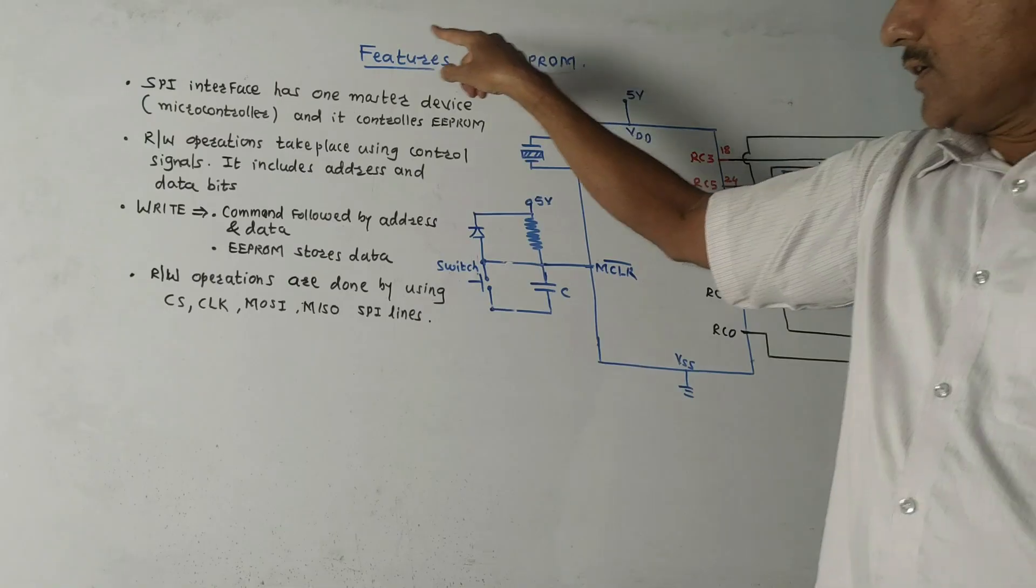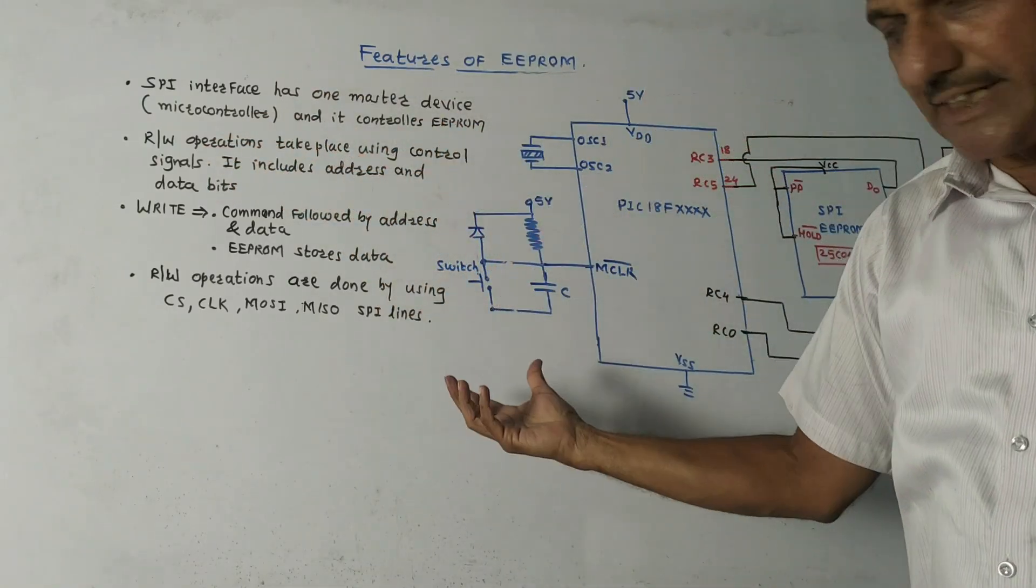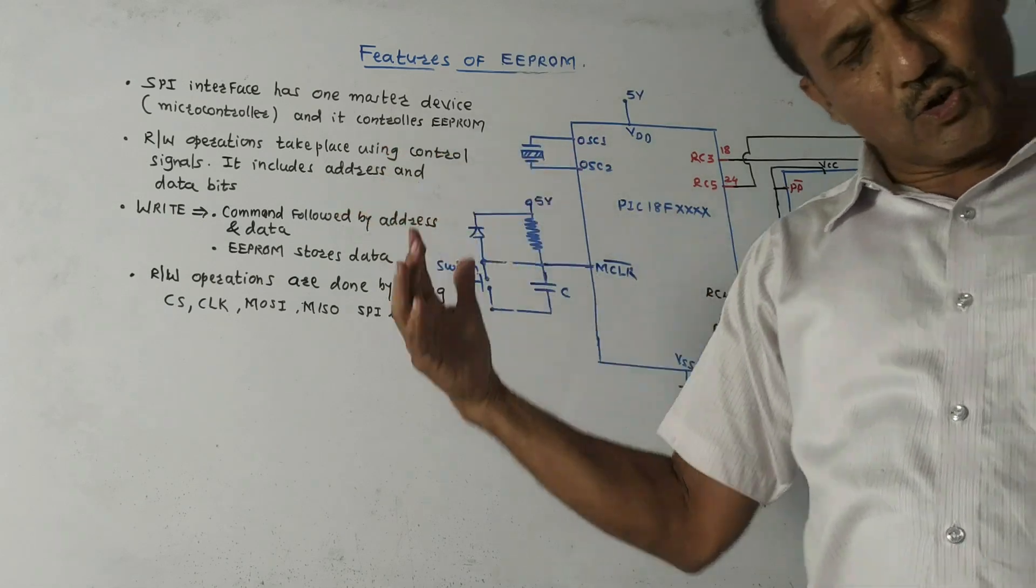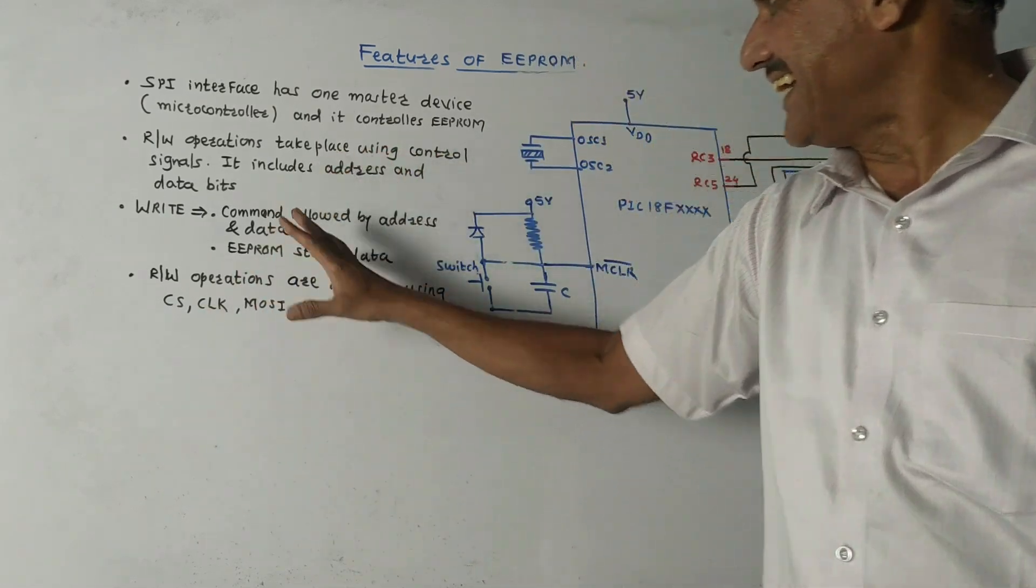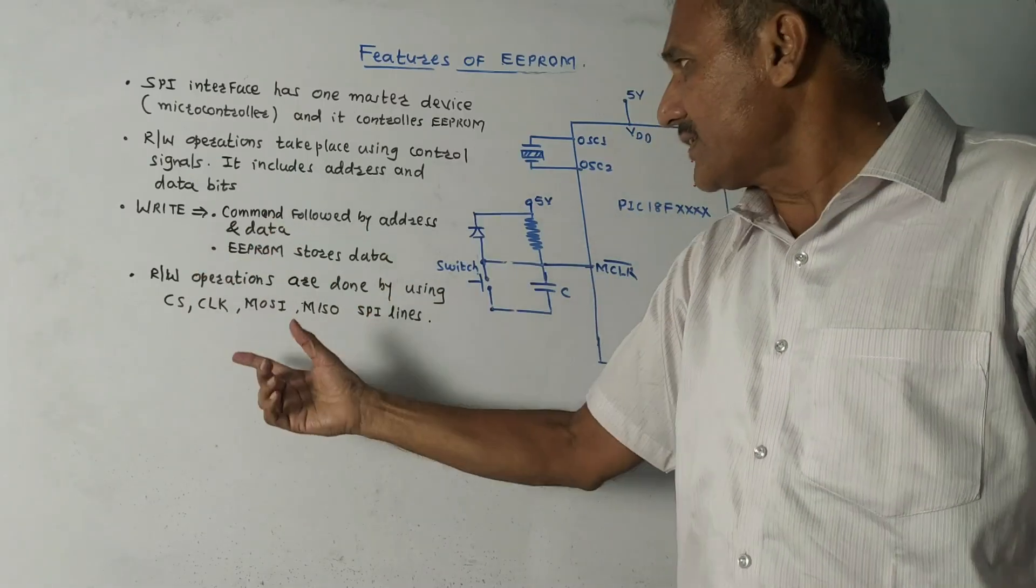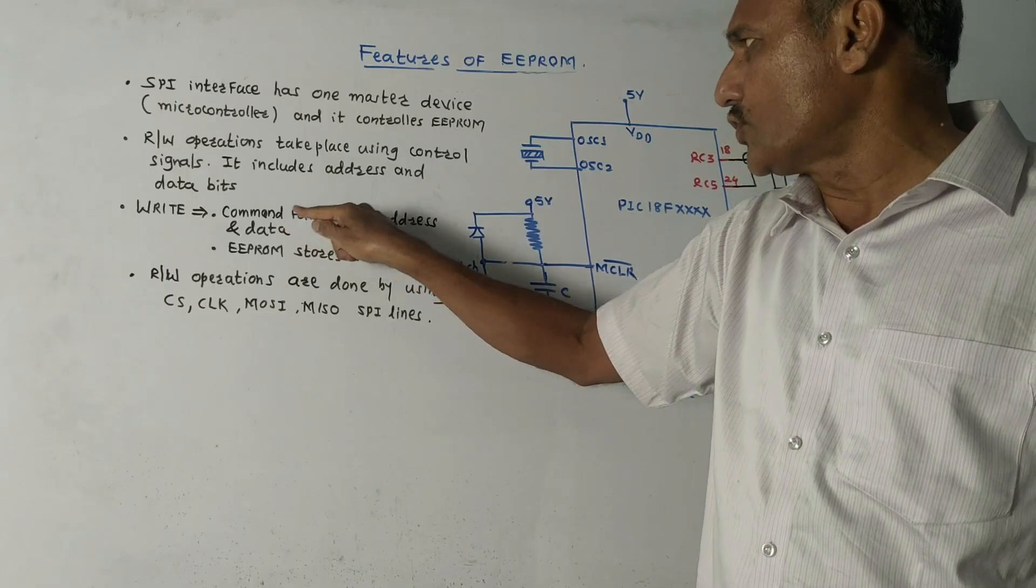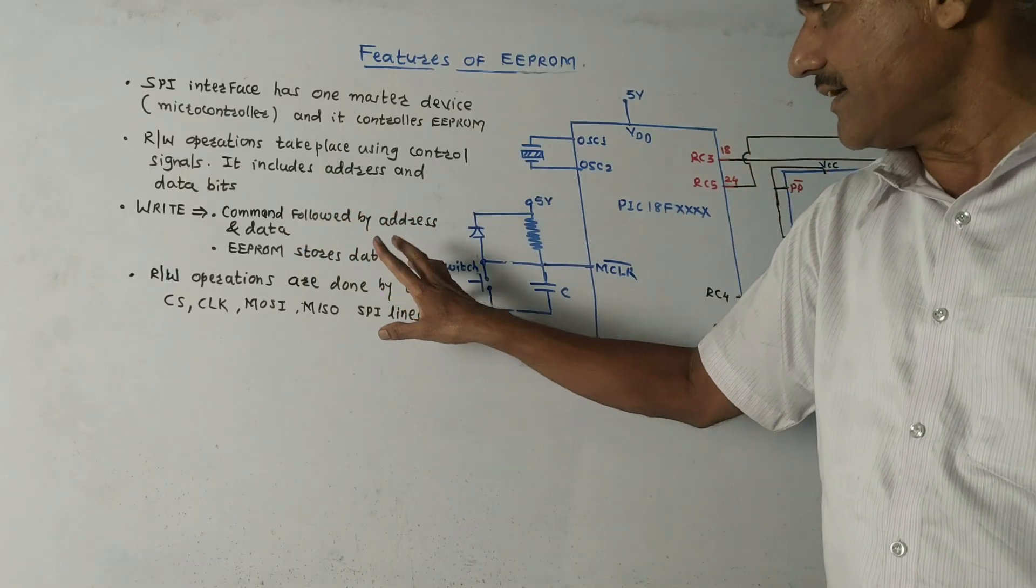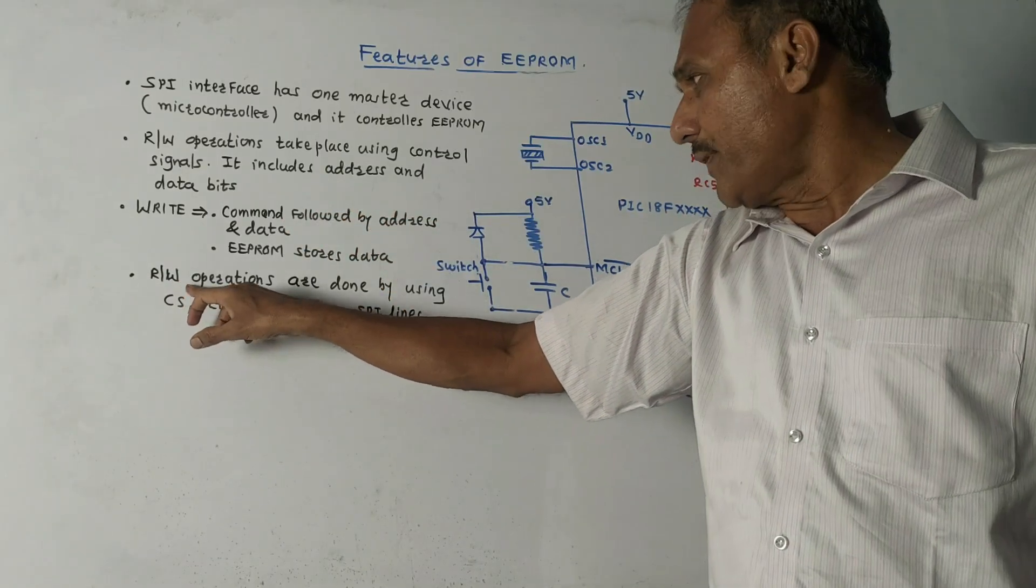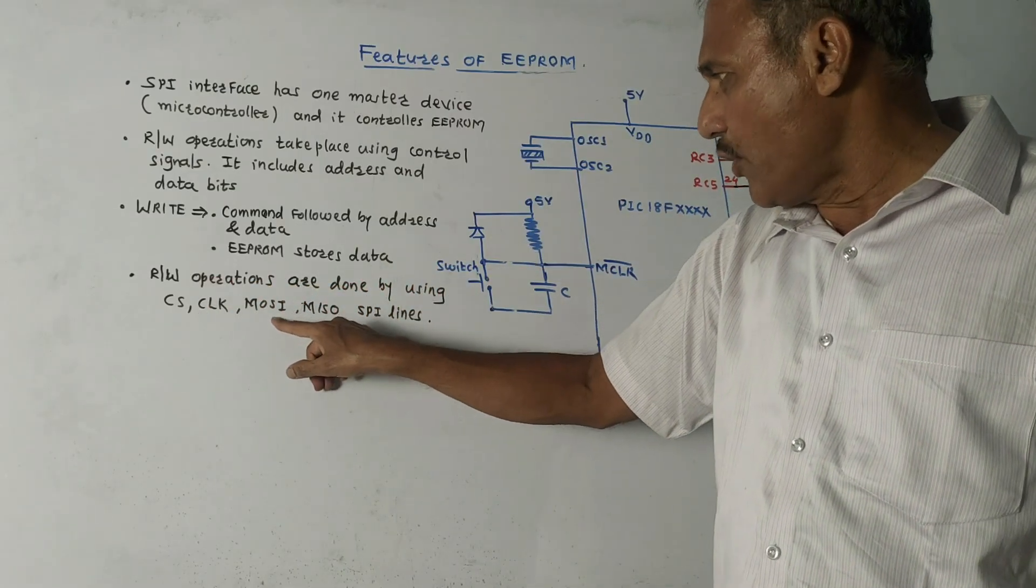This PIC microcontroller is a master device. Read/write operations take place using control signals including address and data bits. For write operation, EEPROM stores data using write command followed by address and data. For read/write operations we use CS, CLK, MOSI, and MISO SPI lines.